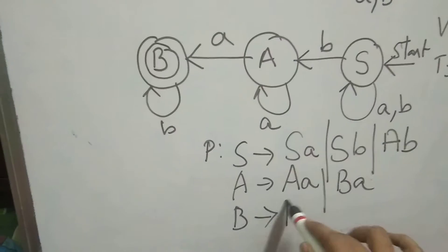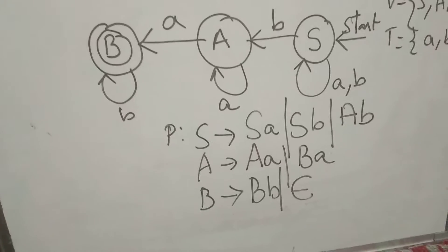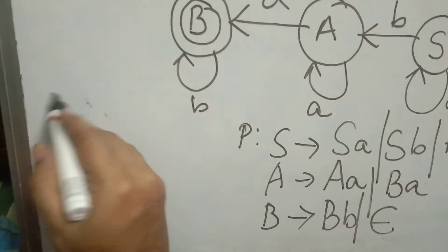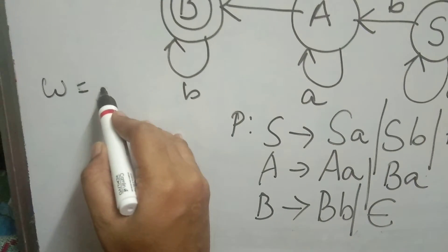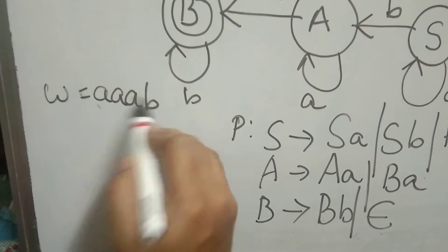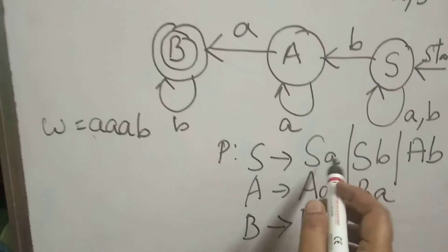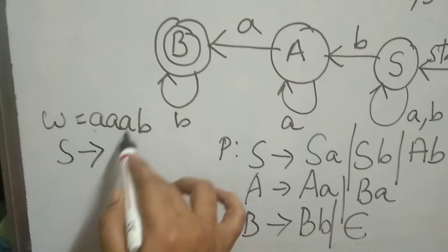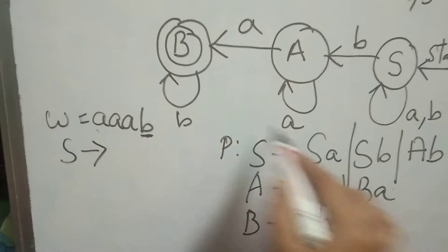A, B — that is the final state, which represents epsilon. Now you can derive a string by taking one word. For example, taking W as 'a', 'a', 'a', 'b'. This is the string. If S tends to ending with 'a' and 'b', that is the end of that production.